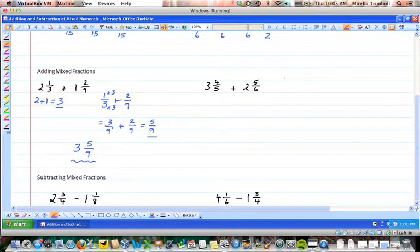Let's take a look at the next one. Again, starting with the whole numbers, we have three plus two is five. Then we'll look at the fraction part of the question: four fifths plus five over six.